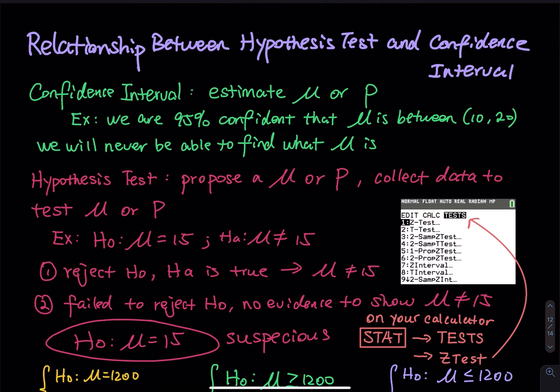For example, we are 95% confident that the true mean mu — or population mean — is between 10 and 20. What does that mean? There is a mu that is unknown. We don't know what it is. So we have a confidence interval saying that we are 95% confident that this unknown value is between 10 and 20.